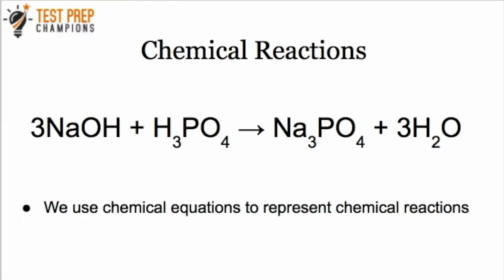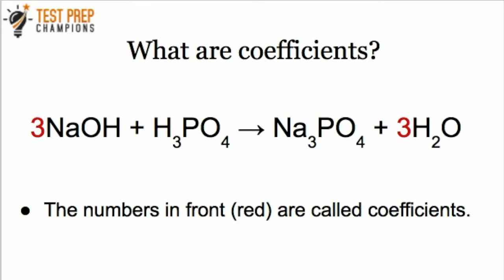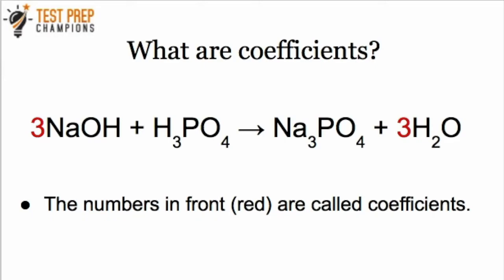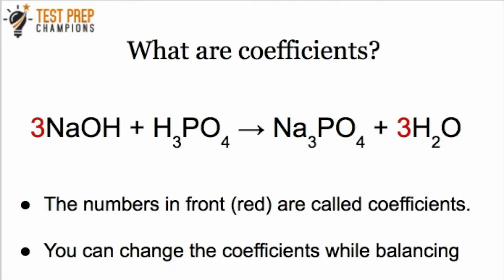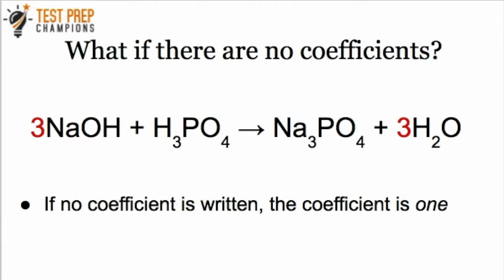We use chemical equations to represent chemical reactions. The numbers in front when you see a chemical equation are called coefficients — I've highlighted those coefficients in red. The coefficients tell us how many NaOH and H3PO4 molecules will react, and how many Na3PO4 and H2O molecules will be produced. Note that when you're doing your balancing, you can change these coefficients. If no coefficient is written, you just assume that the coefficient is 1.